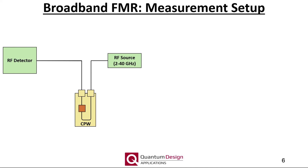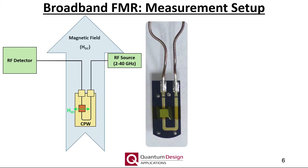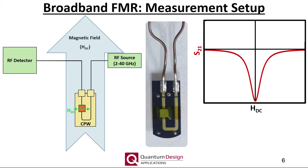Coplanar waveguides allow for a broadband excitation of the sample. However, the excitation fields are not as uniform as they are for cavities, and are strongest very near the surface of the coplanar waveguide. This technique is therefore best suited for thin films, and by thin we generally mean less than 100 nanometers. Let us now build up a cryo-FMR measurement system from the ground up. Here is a schematic coplanar waveguide along with an RF current source and an RF detector, which is essentially an RF diode. Our measurements are performed by analyzing transmission through the coplanar waveguide. The incident microwave current is converted to a DC voltage by the detector. The magnitude of this DC voltage is directly proportional to the transmitted microwave power.